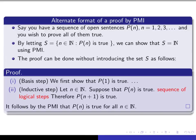In this format, the basis step verifies that P(1) is true. The inductive step gives a generic natural number n, assumes P(n) is true, and deduces that P(n+1) is true. If we accomplish those two things, then S equals the set of all natural numbers by PMI, and therefore we can deduce that P(n) is true for all n.